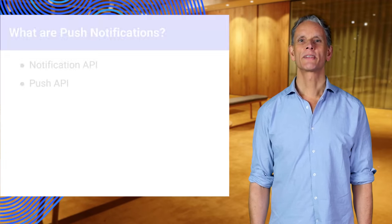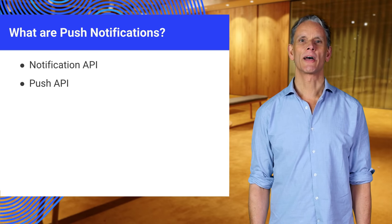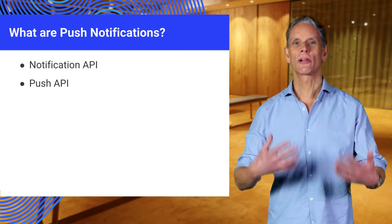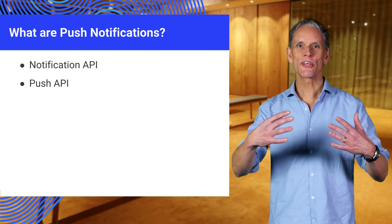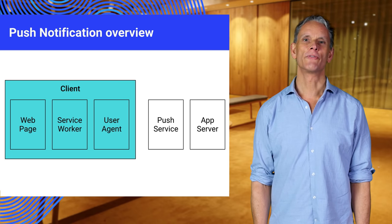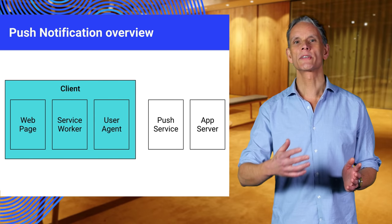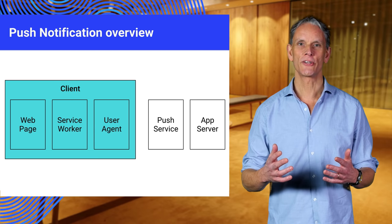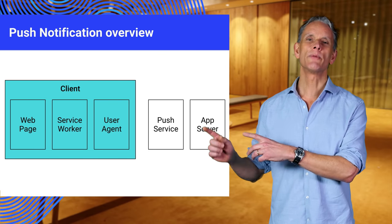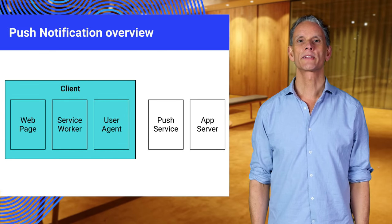Push notifications make use of two APIs: the Notification API to display notifications, and the Push API to handle messages that have been pushed to your client from your server via the push service used by the browser. This diagram gives an overview. On the client side, your web page interacts with service workers, which in turn receive push events via the user agent — the browser. On the backend, you send messages from your application server to the push service, which then delivers them to the correct client.